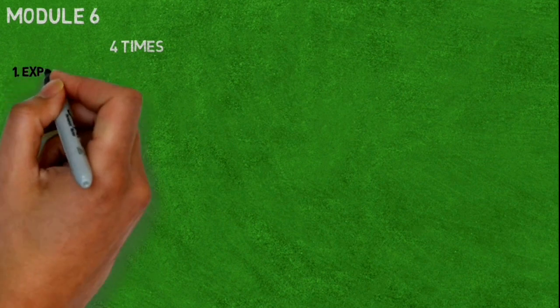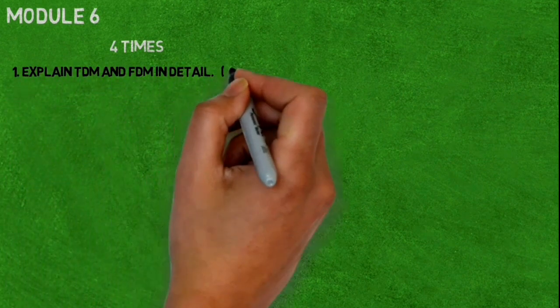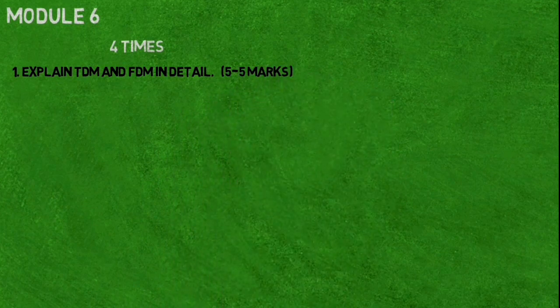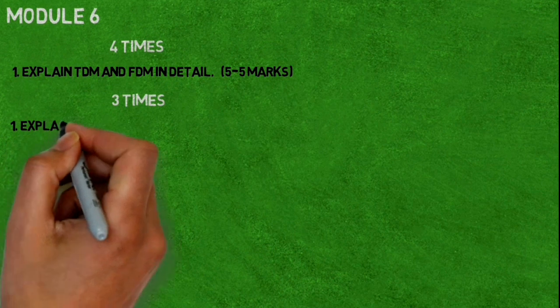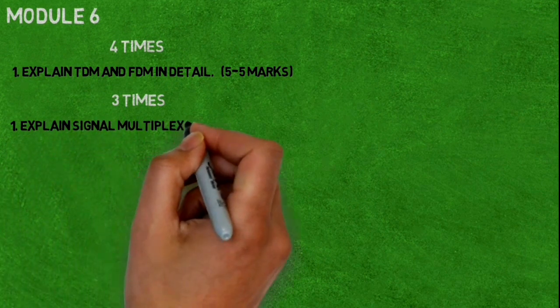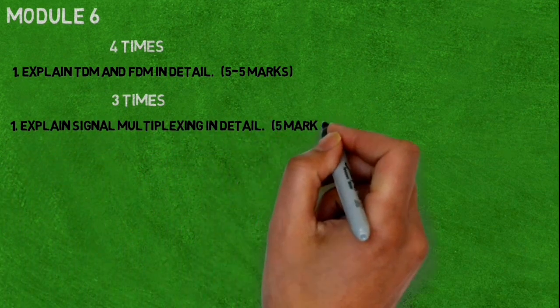Now let's see Module number six. Four times repeated question is: explain TDM and FDM in detail. It comes for five marks. Three times repeated question is: explain ARTS in detail. It comes for five marks.